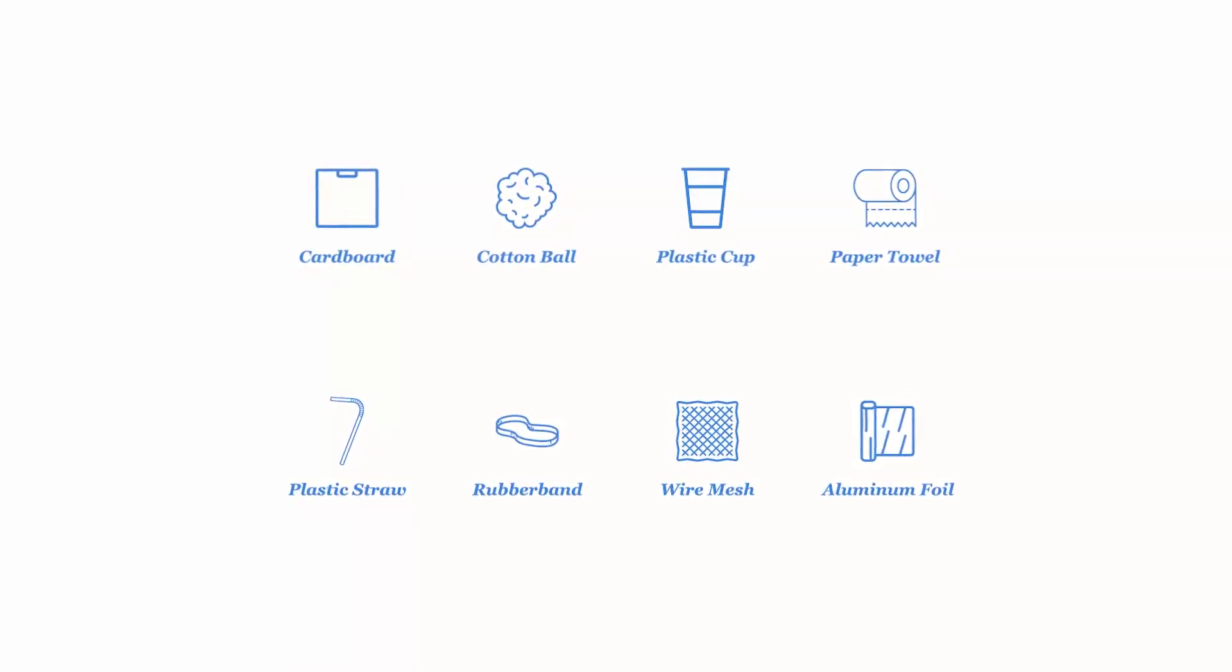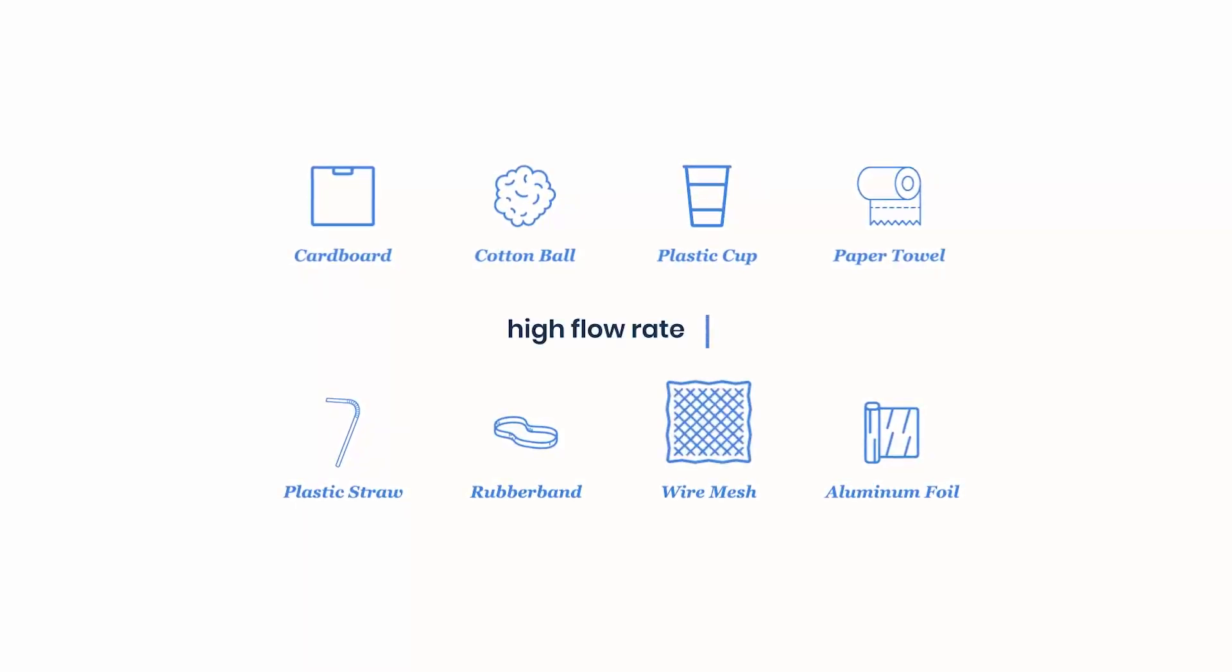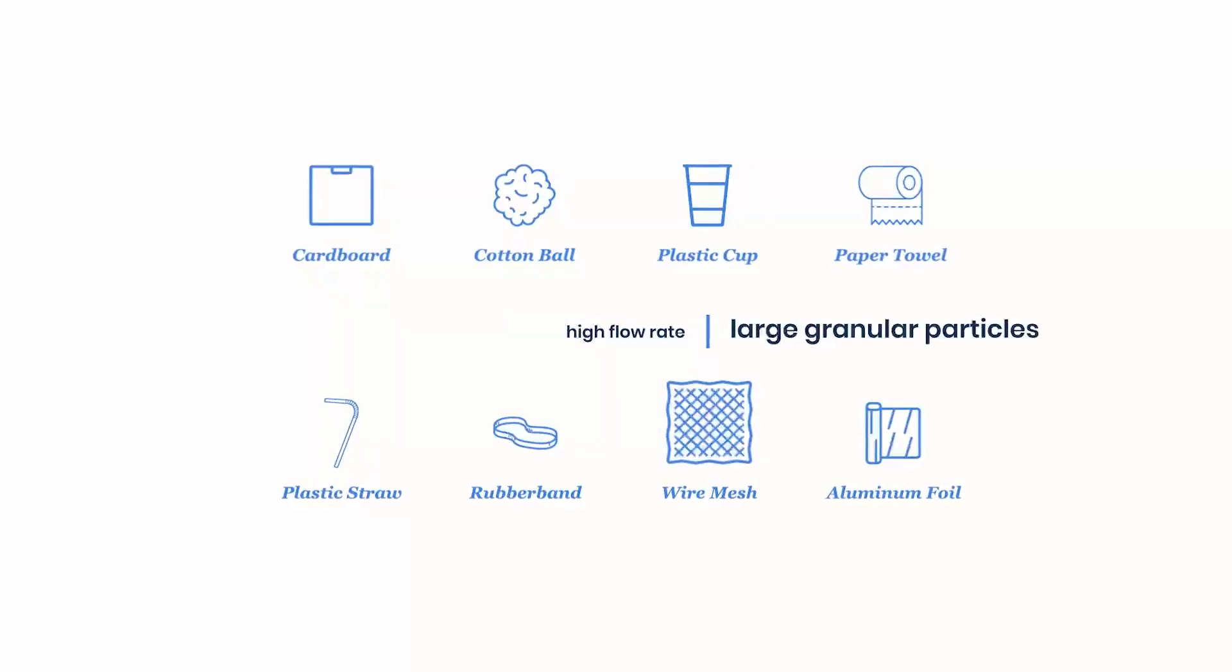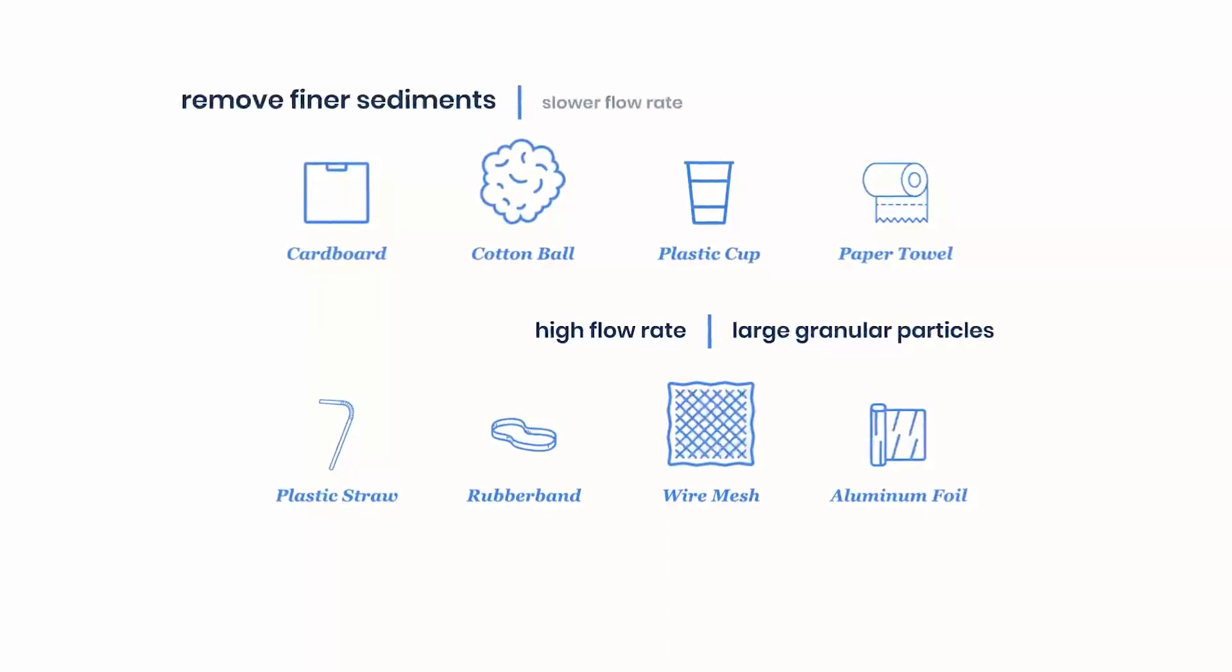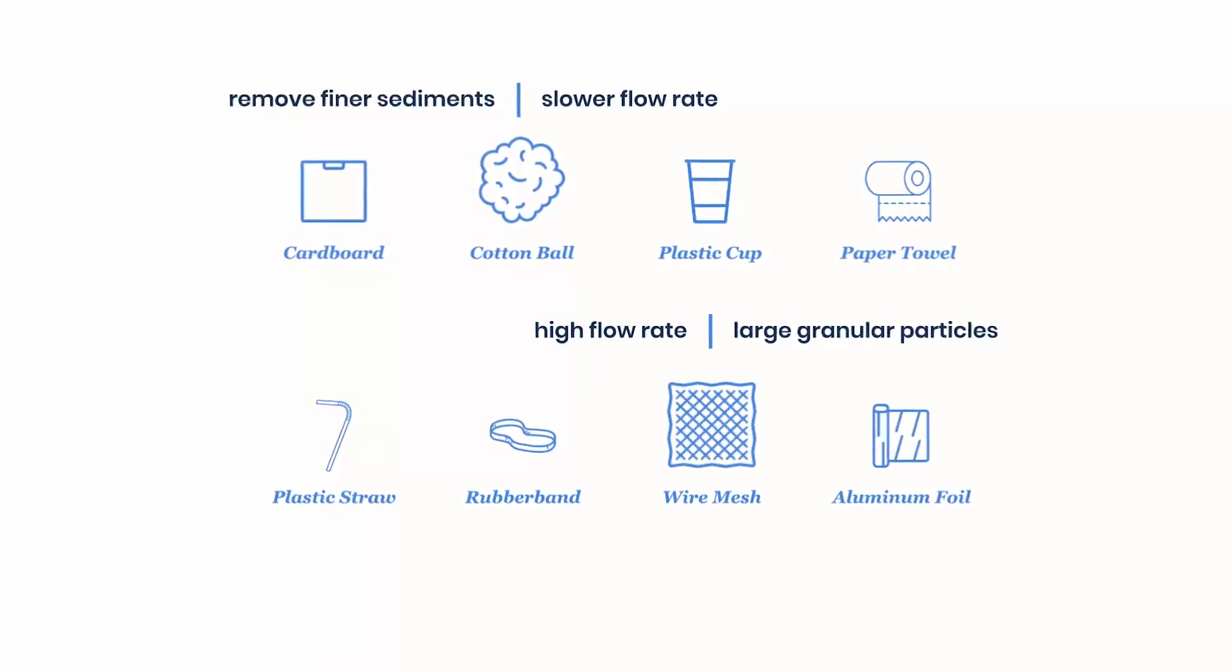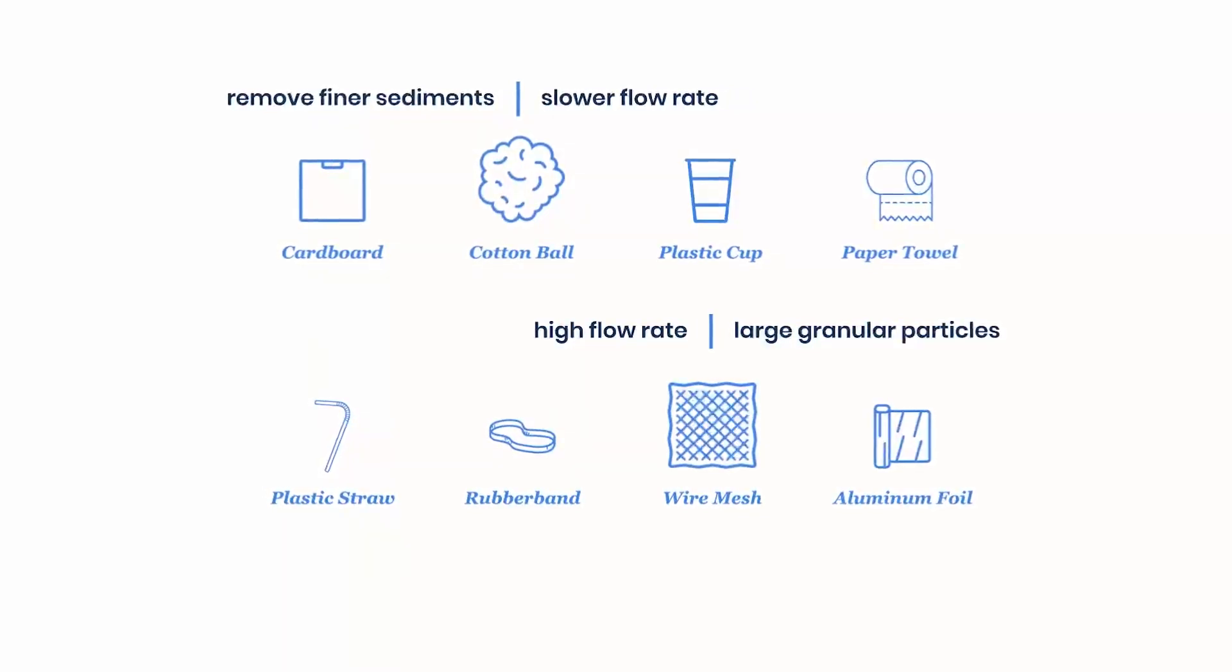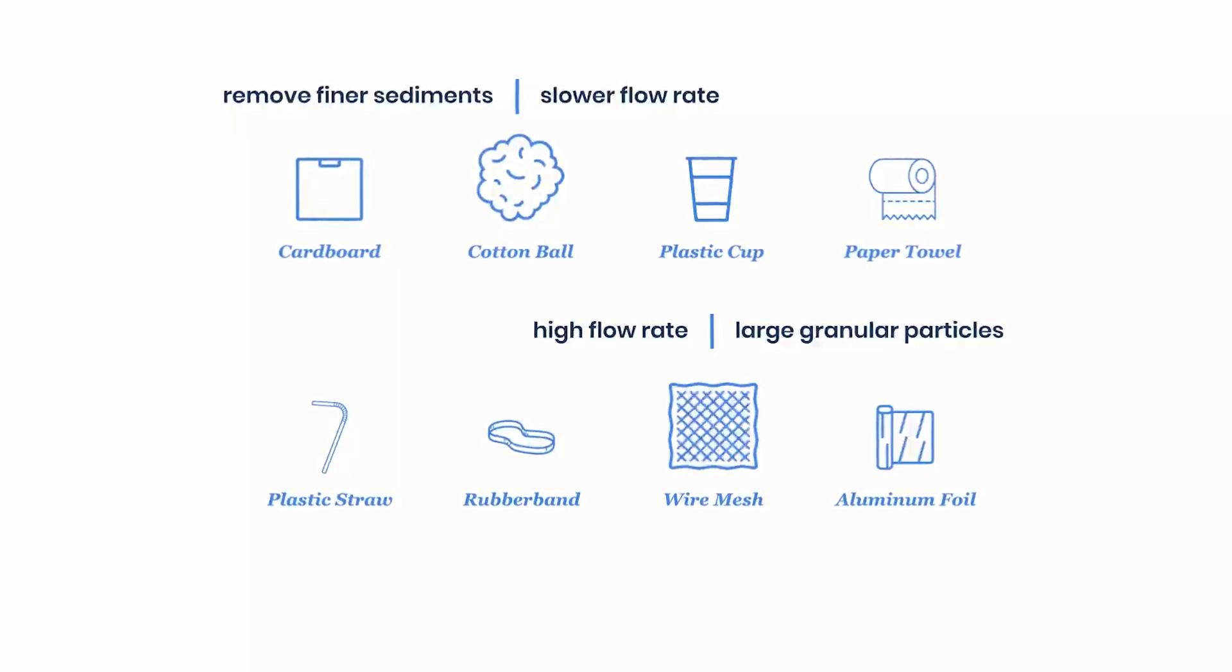When trying to remove sediments from water with your filtration system, a wire mesh may allow water to exit the filter at a higher flow rate, but may only capture the larger granular particles. On the other hand, a cotton ball may remove finer sediments, but may have a slower flow rate. As you can imagine, there may be several options, or combinations of options, that can solve the same problem.